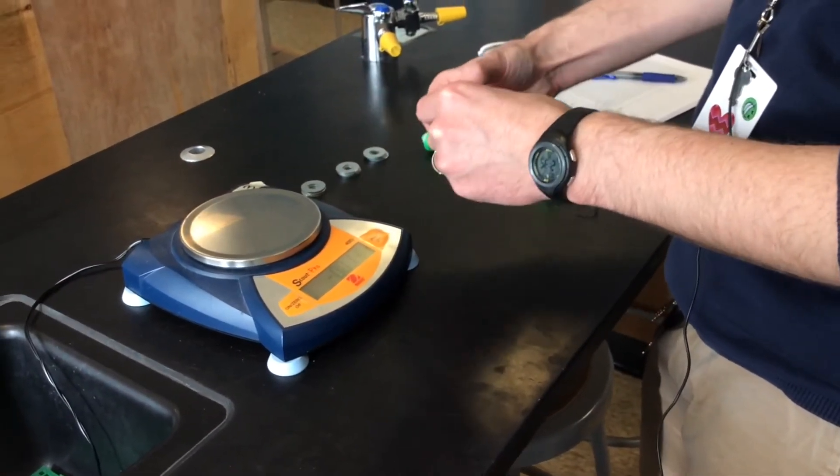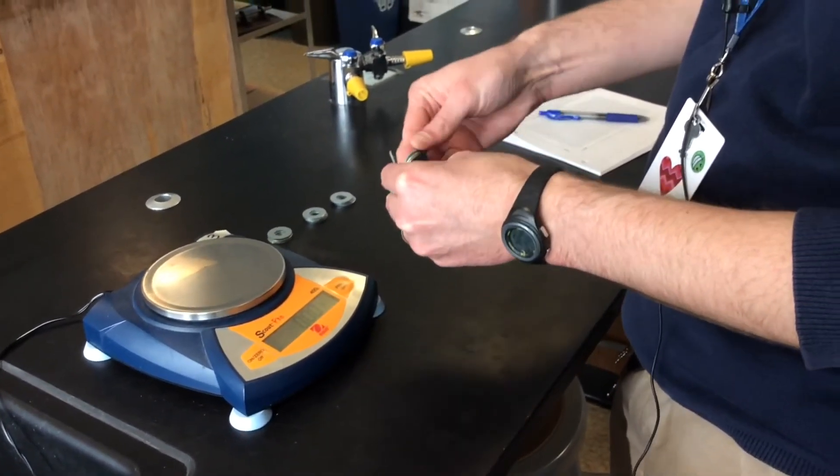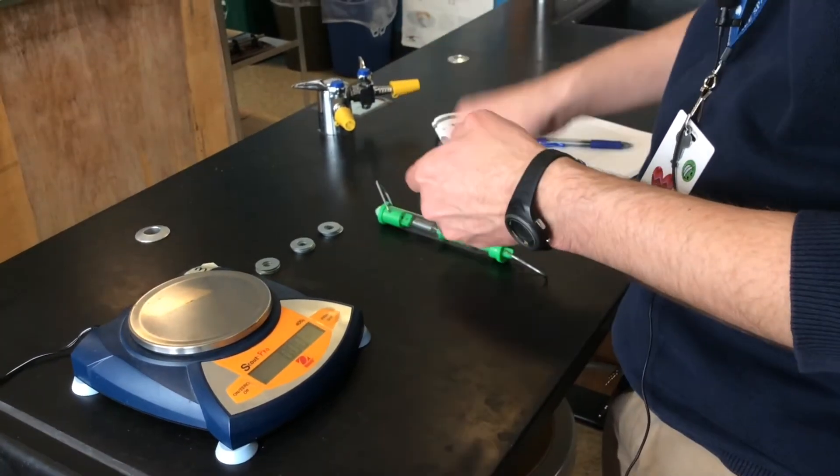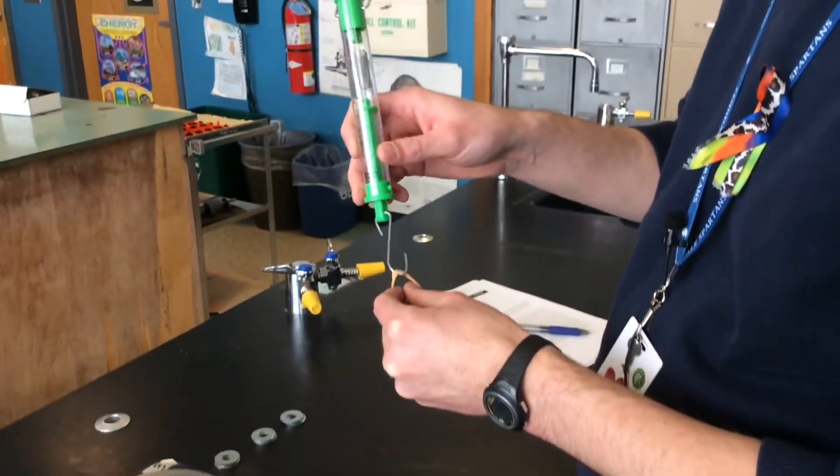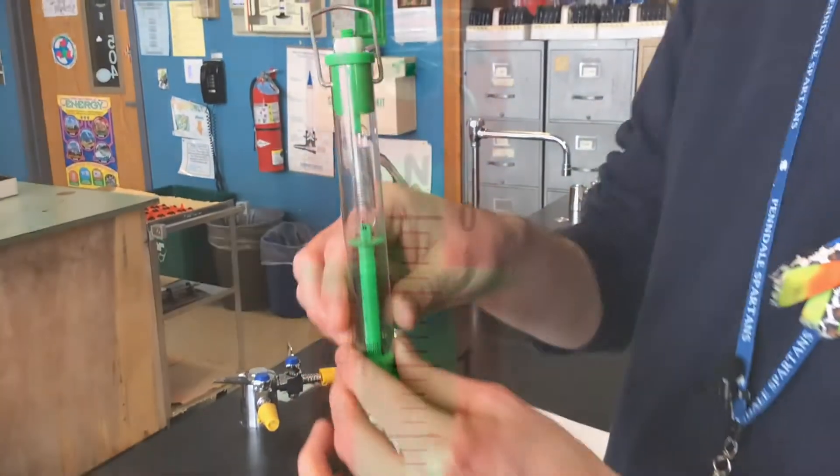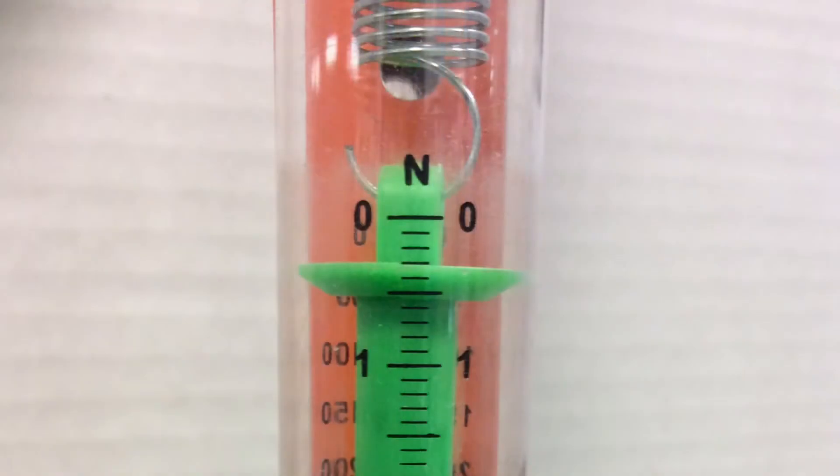Our second data point is going to be six washers, so I'm adding three washers to this. We're just setting it on the spring scale, and again, reading it. Record that on your data table, measuring it in newtons.